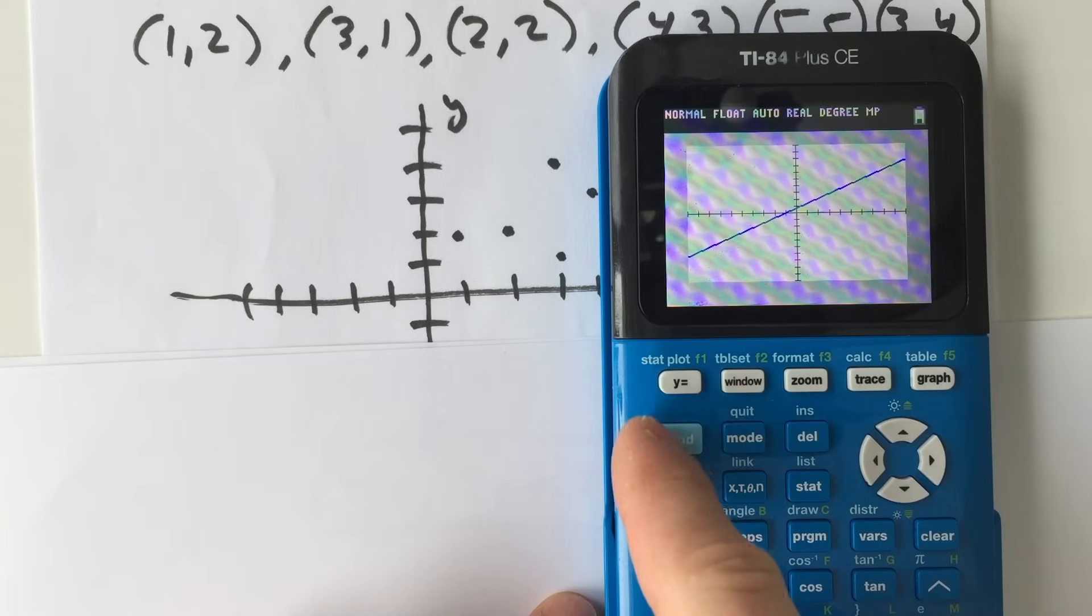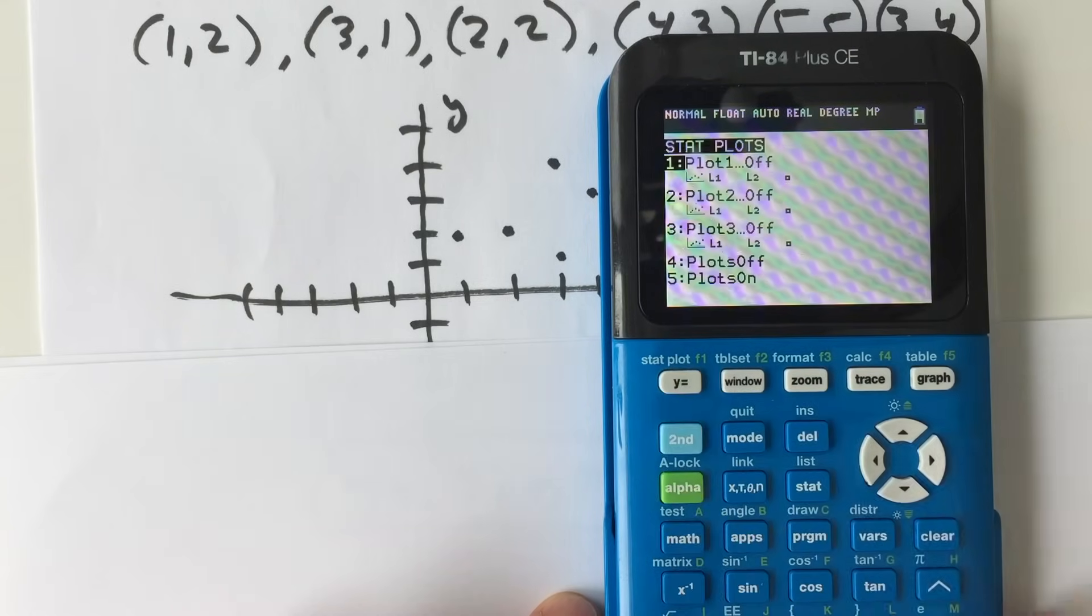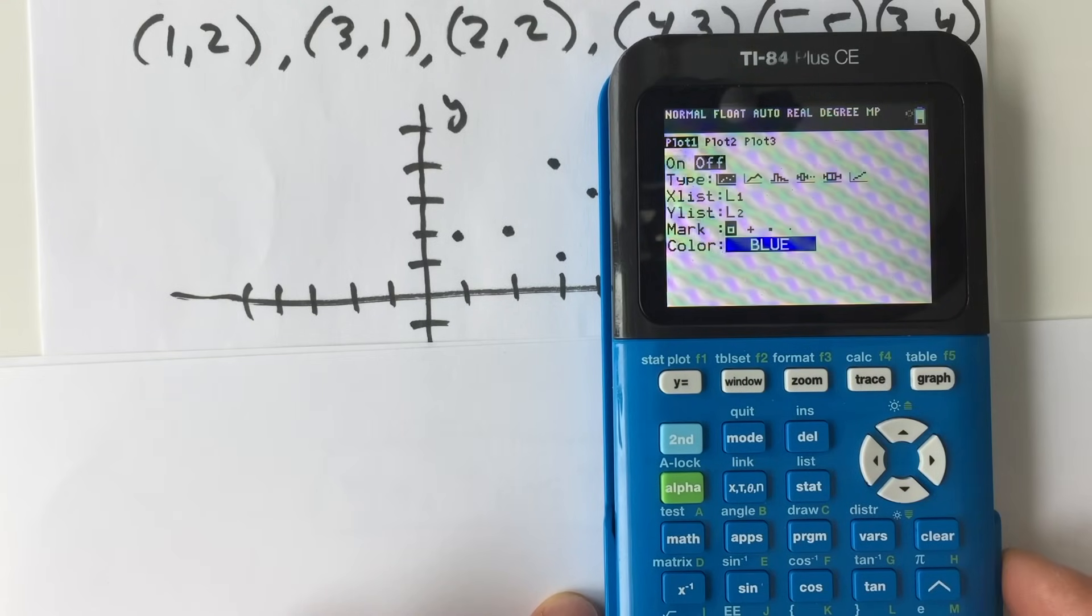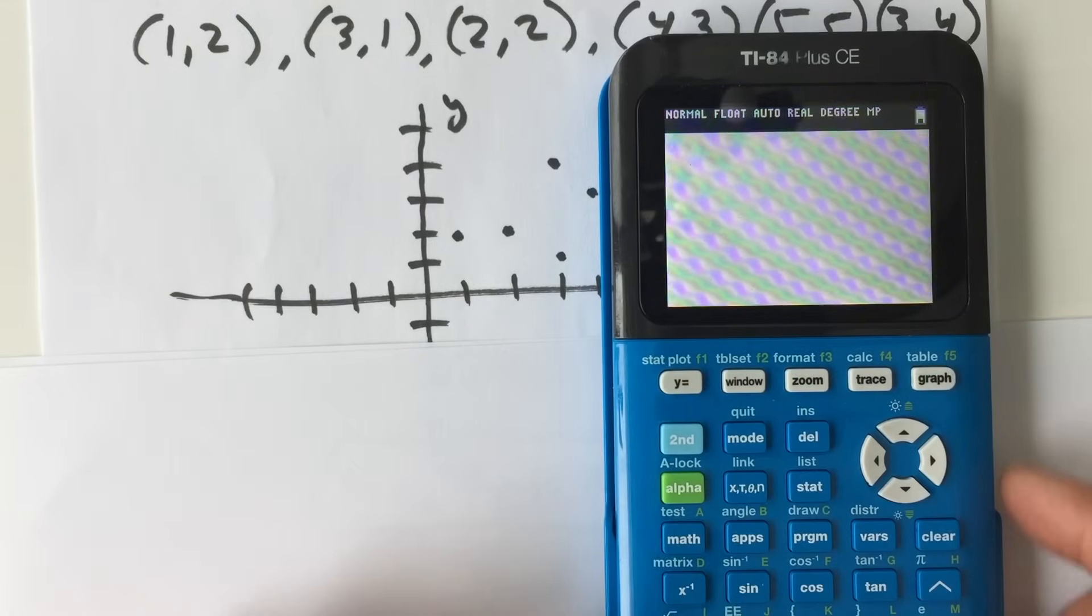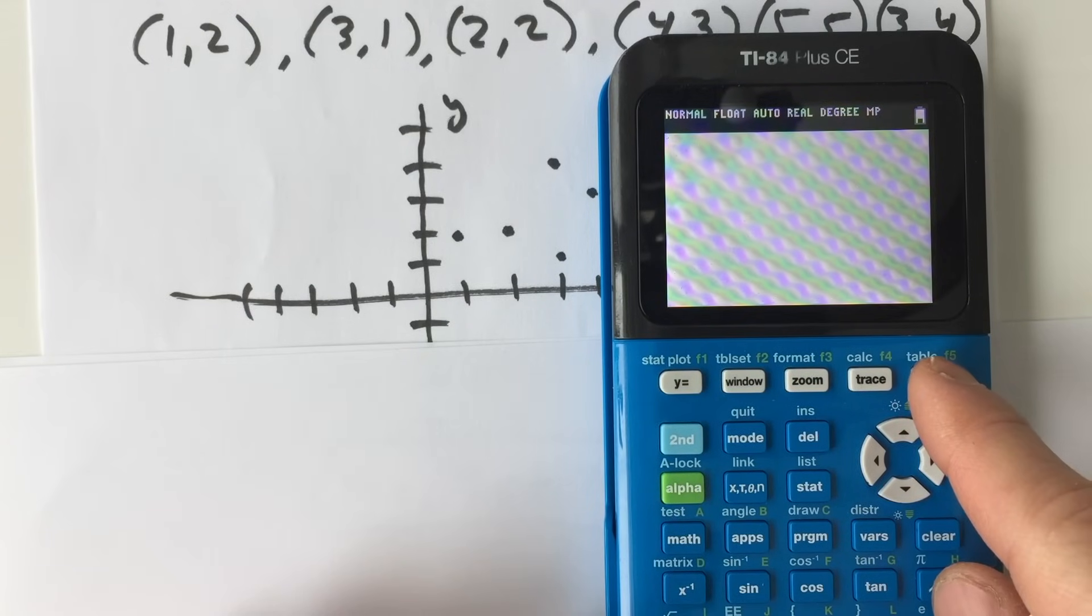Let's go to over here, second, stat plot, and you see how that says plot off. Let's turn that on. So we're going to on, and then second quit, and now let's go back to graph over here in the upper right-hand corner, graph.